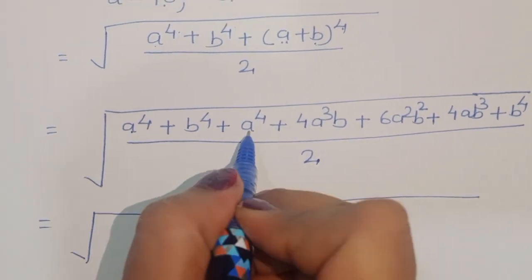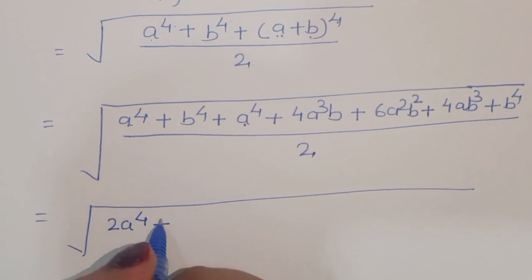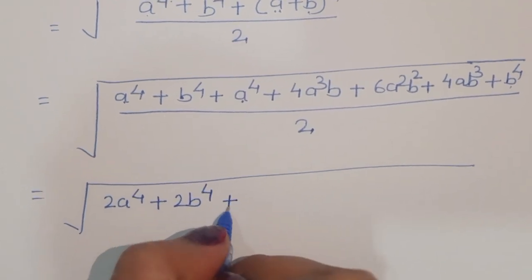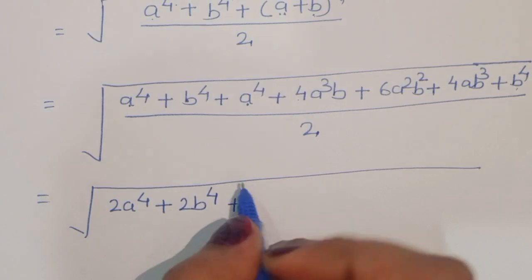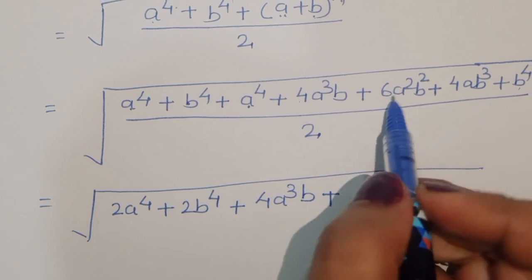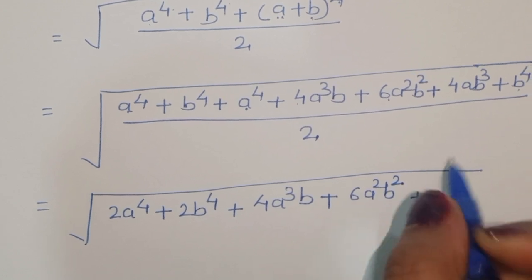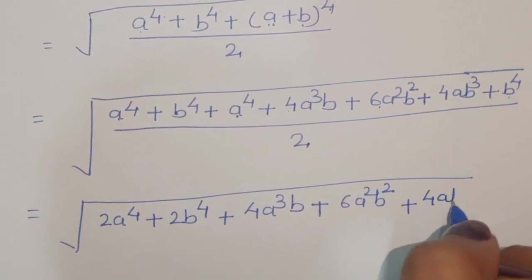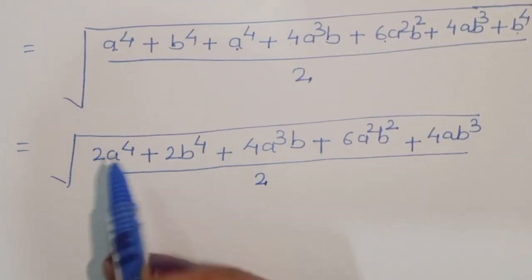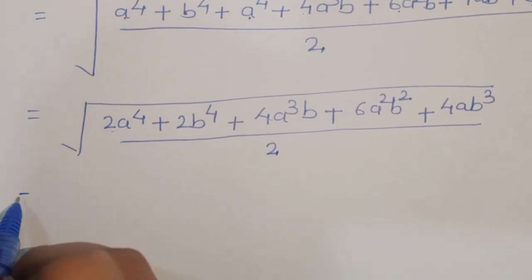After substituting the expansion, we combine the a⁴ terms: a⁴ plus a⁴ gives 2a⁴. Similarly the b⁴ terms give 2b⁴. Then we carry the remaining terms: plus 4a³b plus 6a²b² plus 4ab³, all divided by 2.